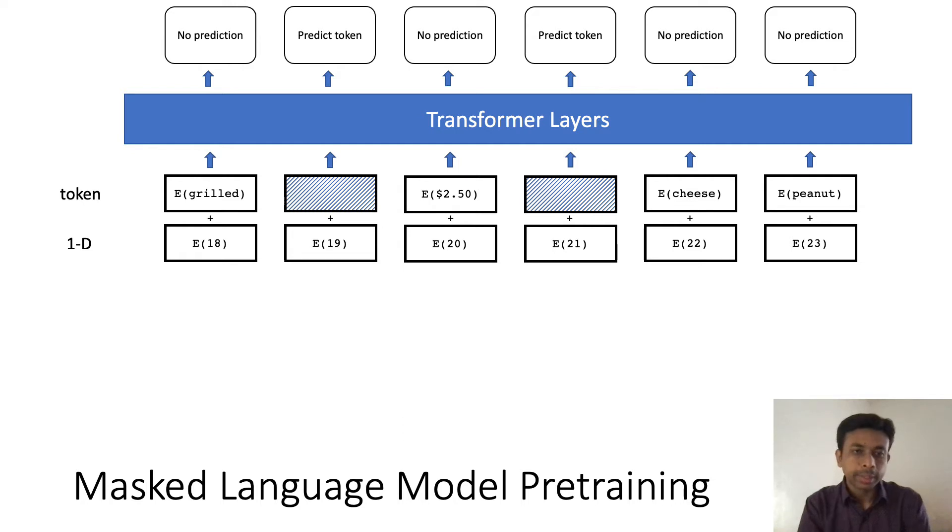BART is trained using the masked language modeling loss, where some tokens are randomly chosen from a sentence and masked out. The task for the model is to predict those masked tokens. This is great for understanding text, as this forces the model to understand the relationship between the words in a sentence.